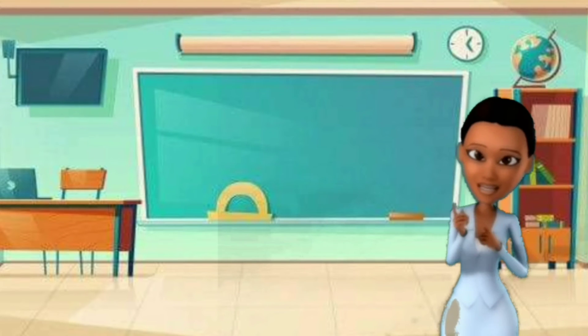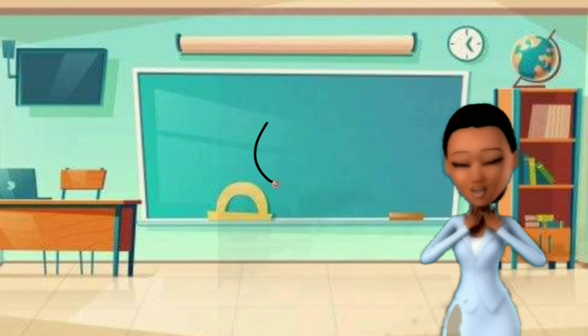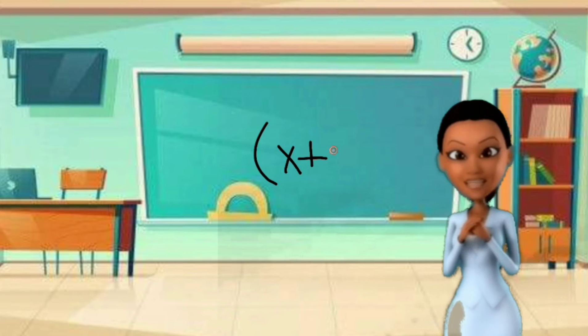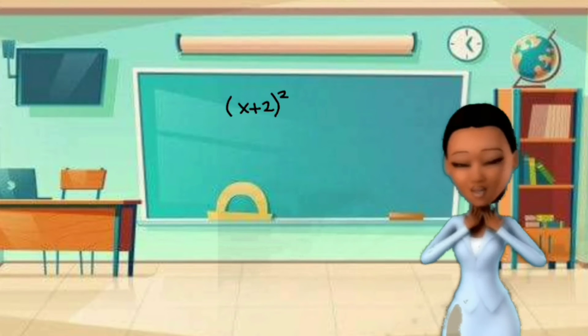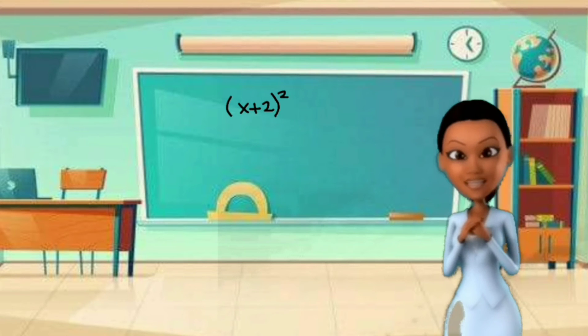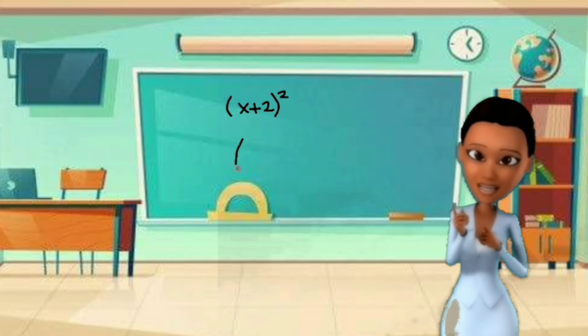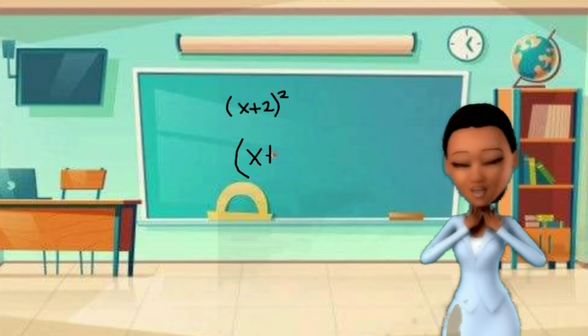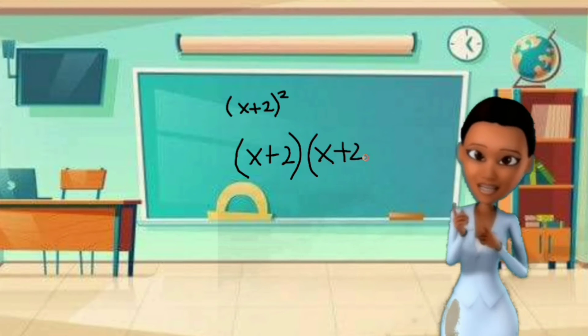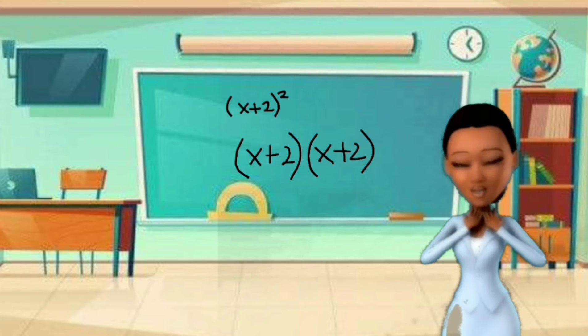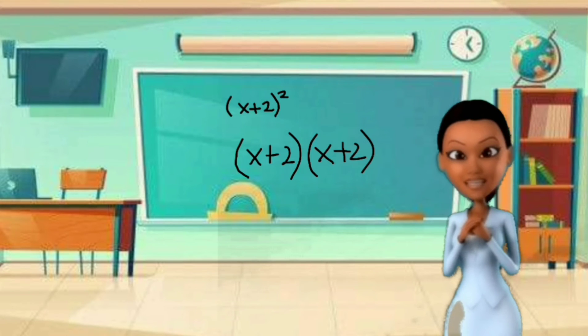Let's start solving first this simple equation, x plus 2 squared. In solving this equation, we have to distribute it first so we'll be having x plus 2 and x plus 2 multiplied by itself.